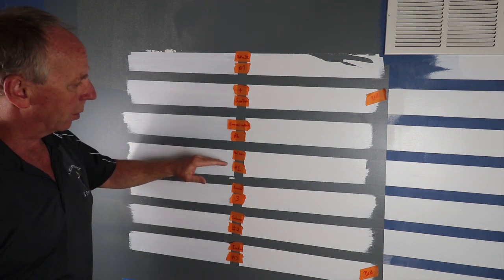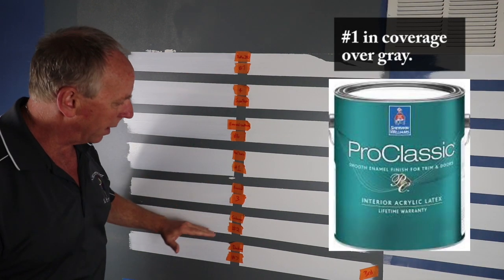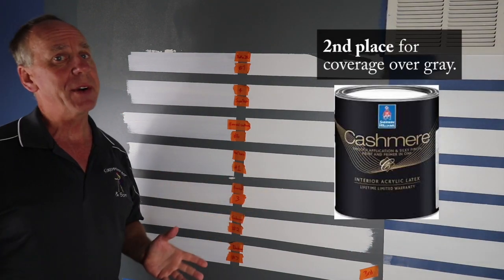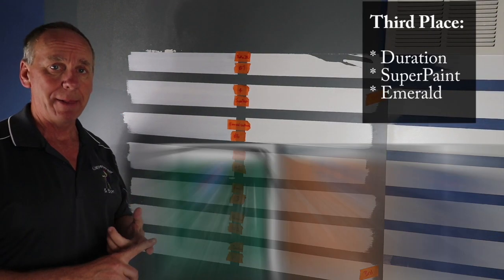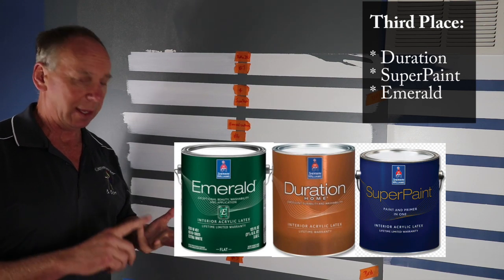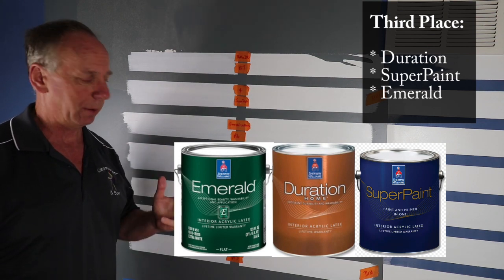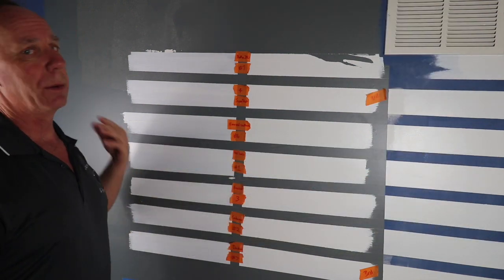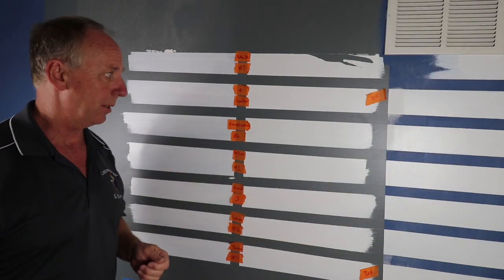So the judges scored Pro Classic as overall number one with two coats, Cashmere second place, a three-way tie between Super Paint, Duration, and Emerald Semi-Gloss for third place. The next one was the Emerald Urethane, which came in second to last with Promar coming in last place.